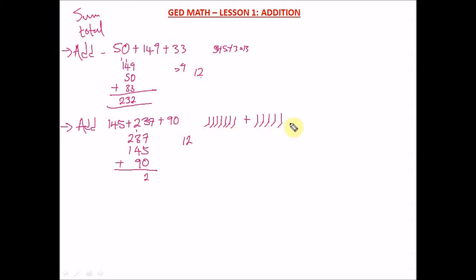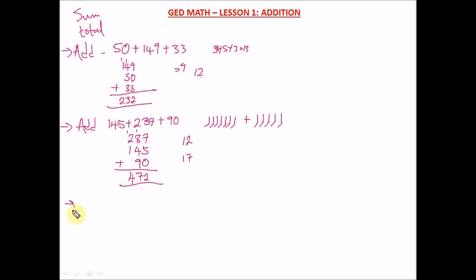So we have 2 here and carry 1. One plus three is four, four plus four is eight, and eight plus nine is seventeen. Drop down 7 and carry 1. One plus two is three, three plus one is four, and four plus zero is four. So our answer is 472.